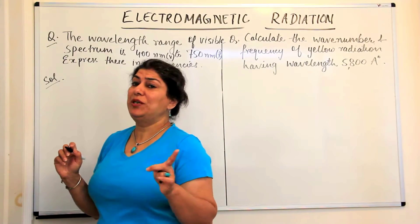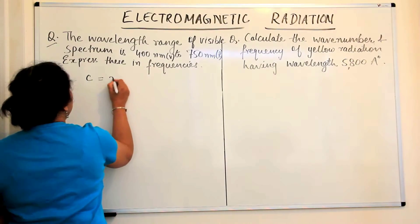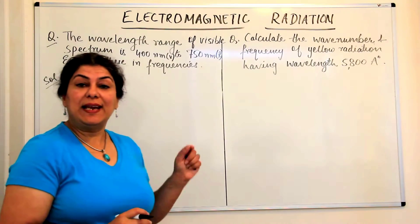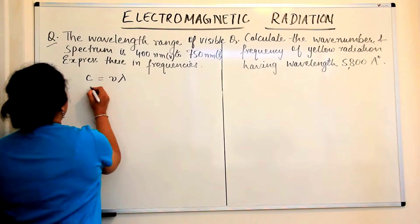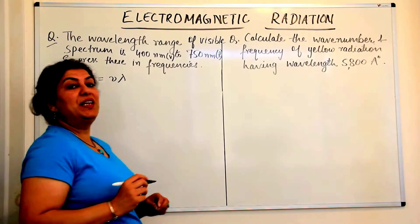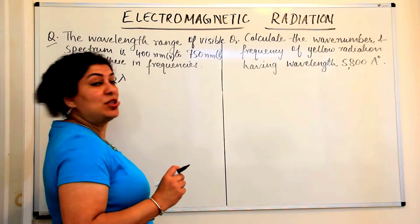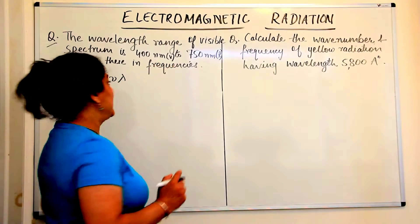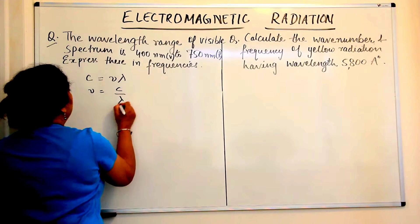The formula we would be using is: speed of light C is equal to nu times lambda, where nu is the frequency and lambda is the wavelength. C is constant at 3 × 10⁸ meters per second, the speed of light. So nu would be equal to C divided by lambda.